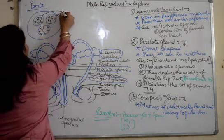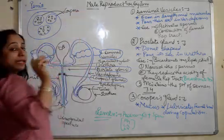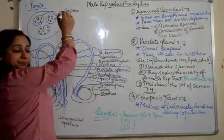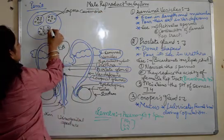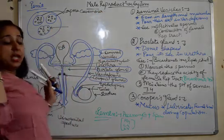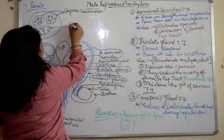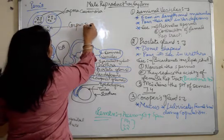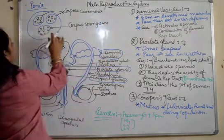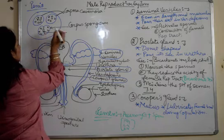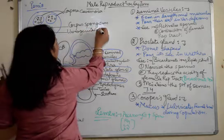These two are known as corpora cavernosa. Corpora cavernosa and this is corpus spongiosum. And this opening is known as urinogenital aperture.